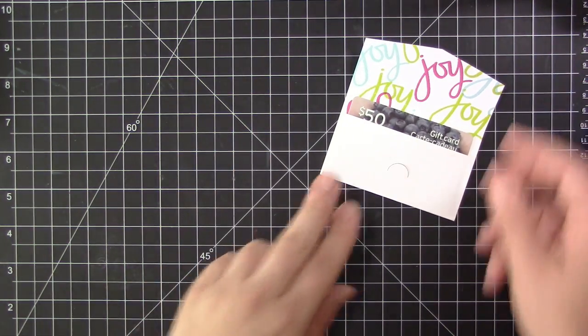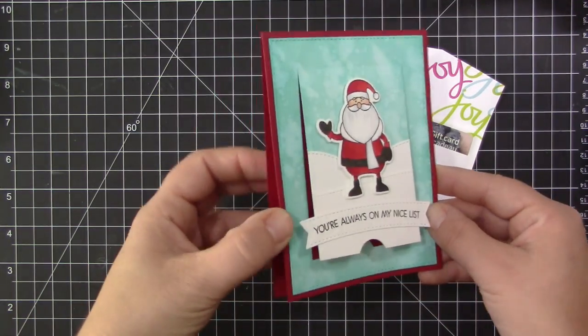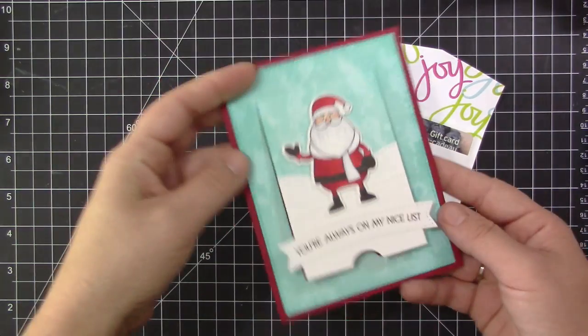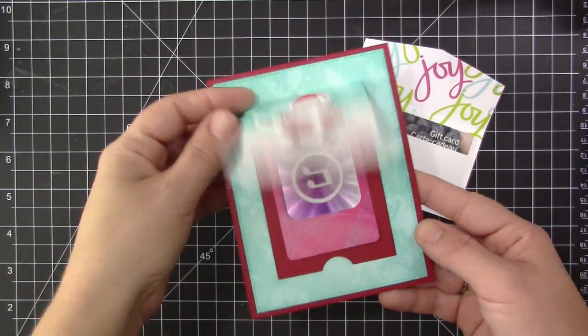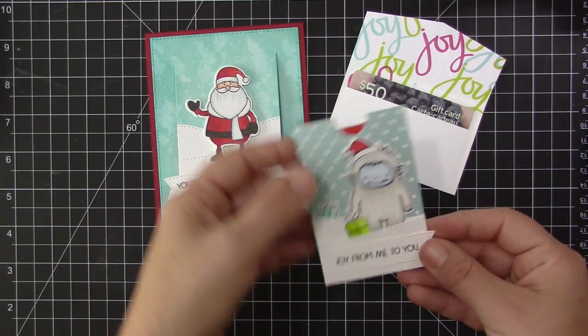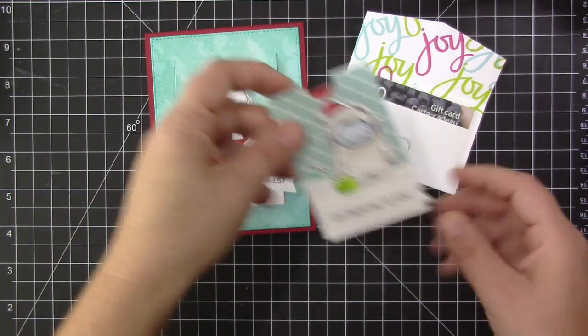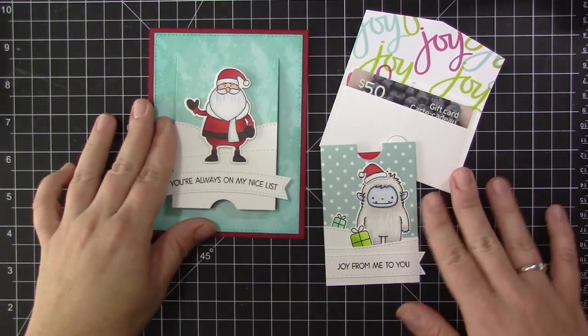So there you have three different ideas for gift card packaging. We have this fun envelope that tucks into the little groove with fun stamping, this great Santa full-size card where the flap opens to reveal a gift card, and this fun little pocket that the gift card slides into. Three great easy quick ways to create gift card packaging for your friends and family during the holidays.